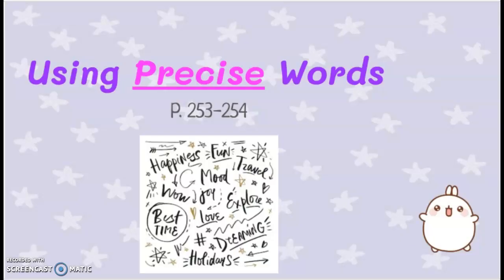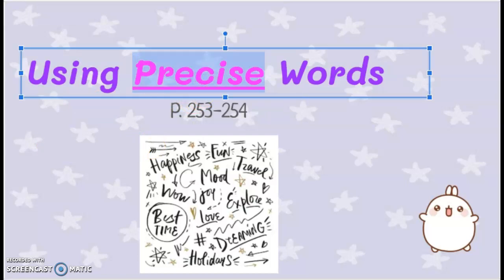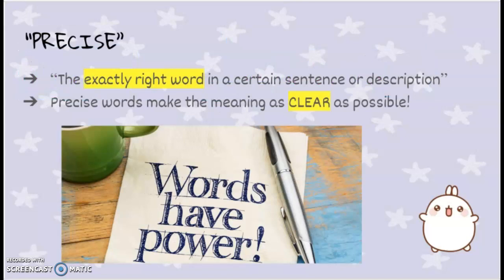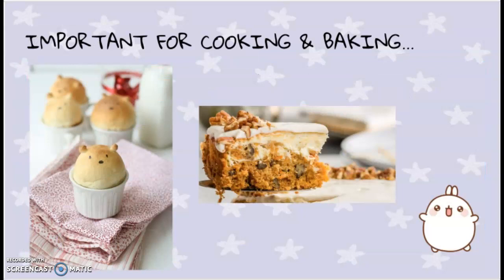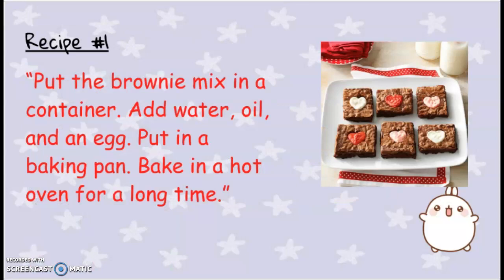What is another word for precise that the book mentioned? Exact — very good. A precise word is basically the exact right word in a certain sentence or description, and they're important because they make the meaning as clear as possible by answering questions. I can think of one example: they're very important when you are looking at recipes for cooking and baking.